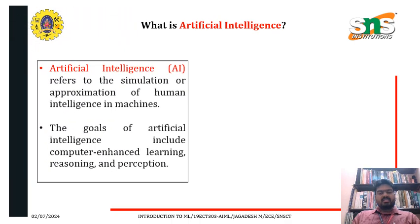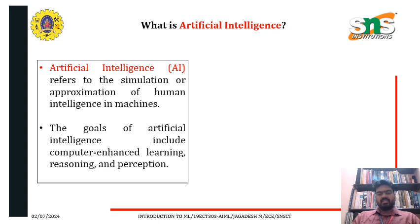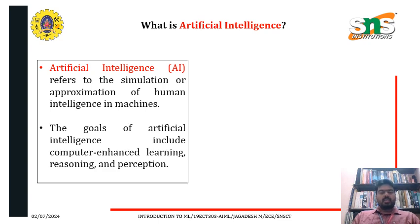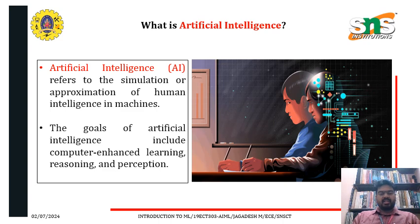What is artificial intelligence? The machine learning we discussed is a part of AI. Artificial intelligence, referred to as AI, is the simulation or approximation of human intelligence in machines. The goals of artificial intelligence include computer-enhanced learning, reasoning, and perception.